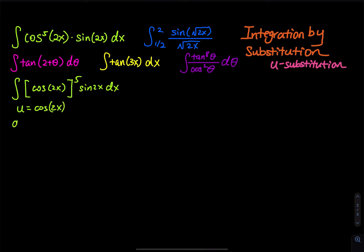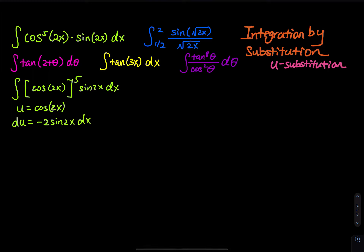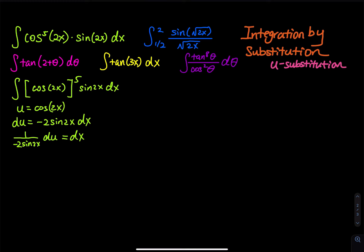The next step is to take the derivative of both sides. The derivative of cosine is negative sine, so du equals negative 2 sine of 2x dx — the 2 comes from the chain rule. Isolating dx gives dx equals 1 divided by negative 2 sine of 2x, du. These three steps are the basic move for u-substitution.